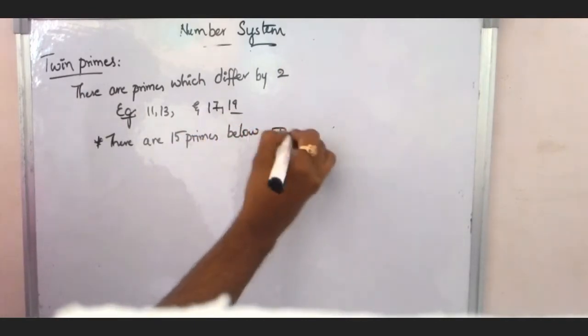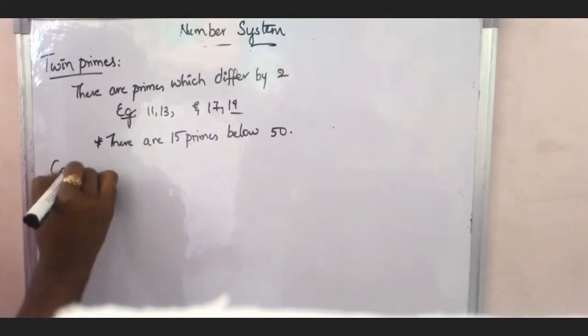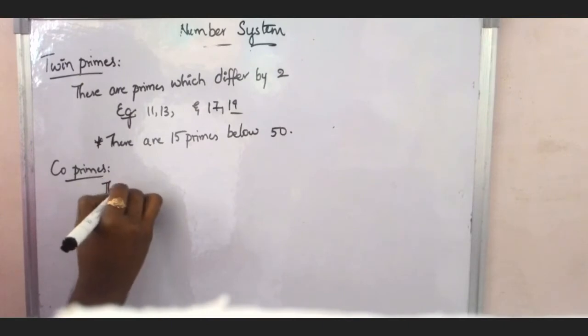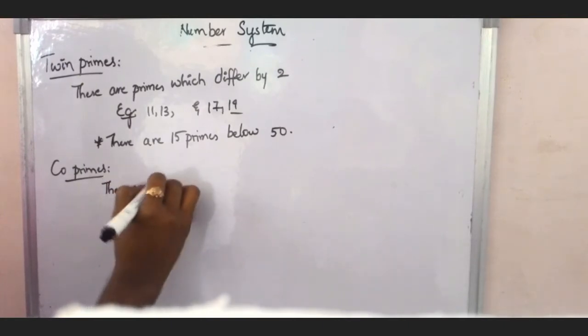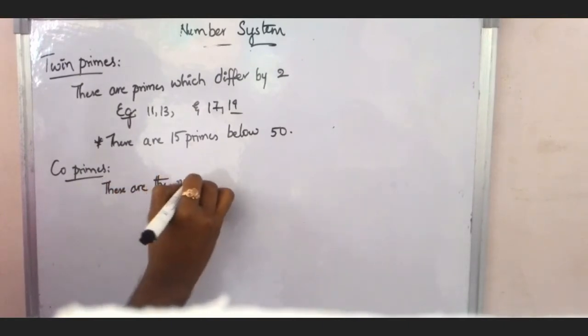So, for example, 11, 13 and 17, 19. Here are the examples. 11, 13. Here are the prime numbers and also here are the difference too. So, 11 and 13 are twin primes.